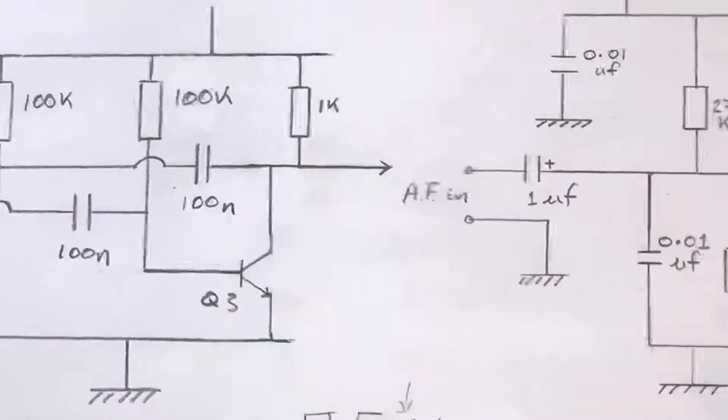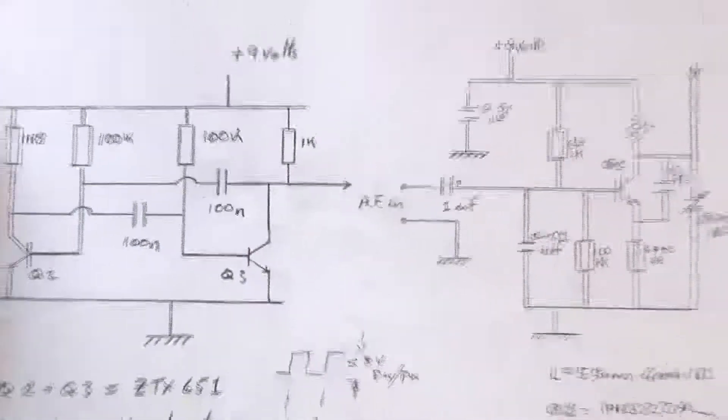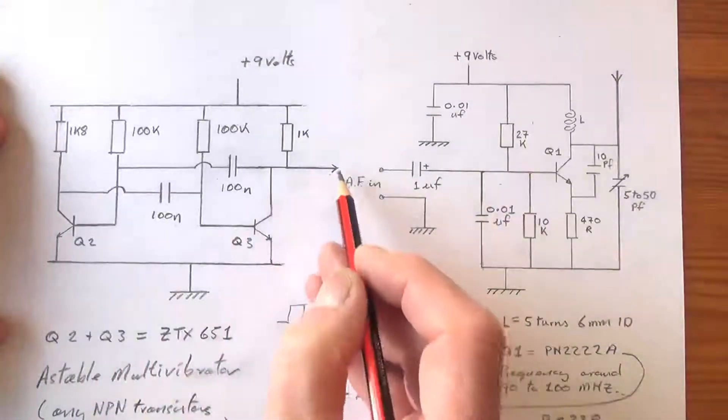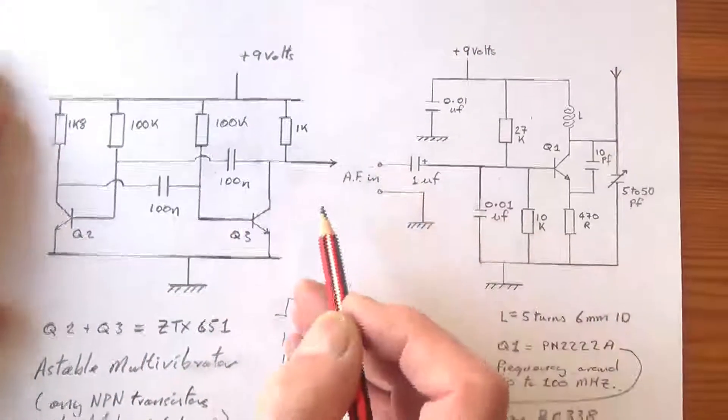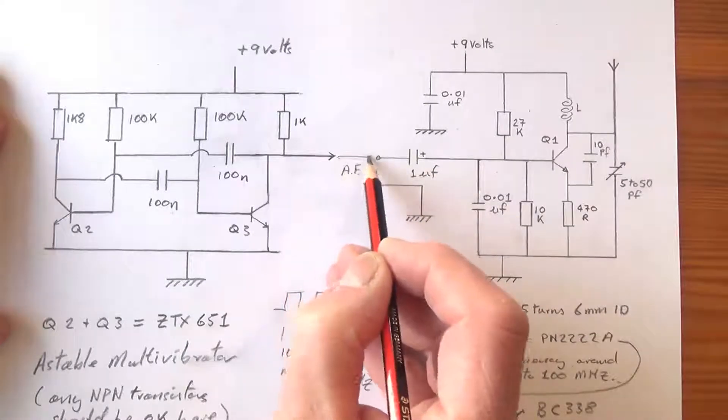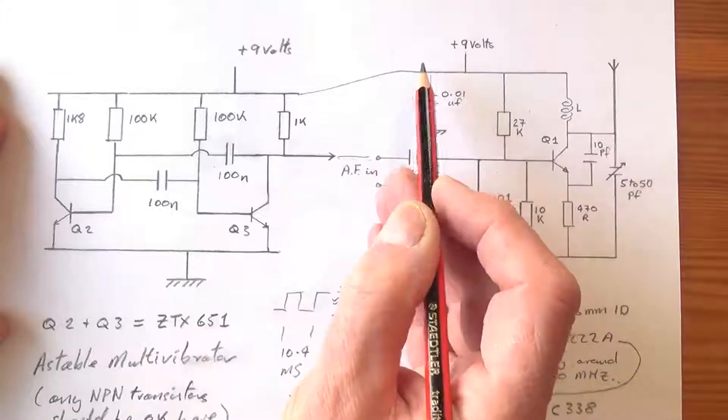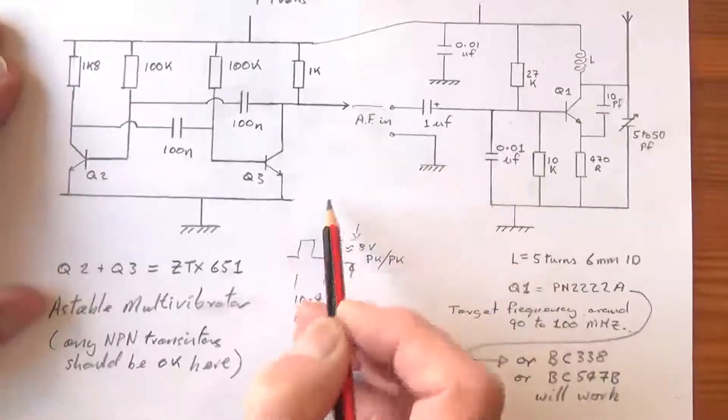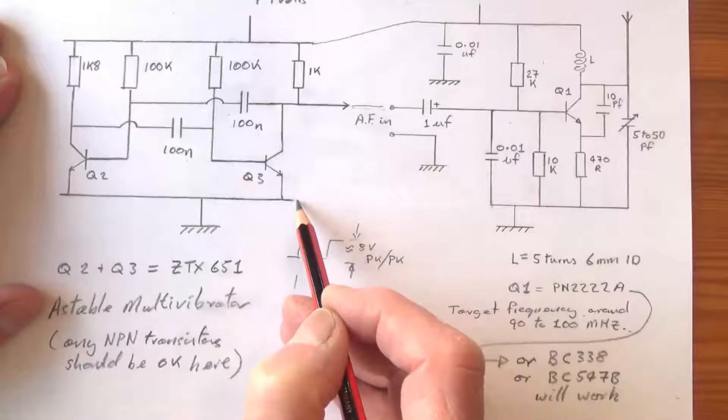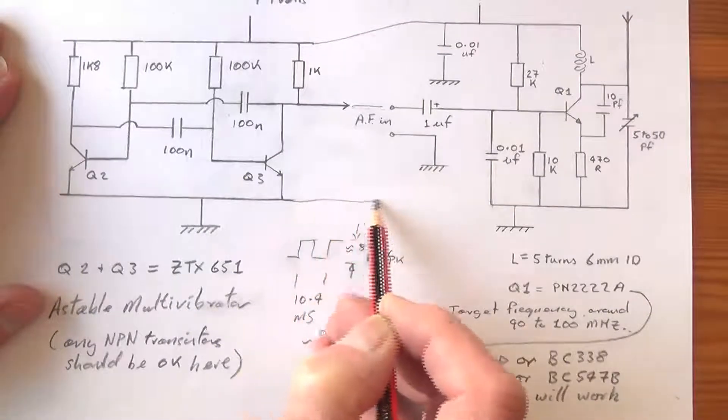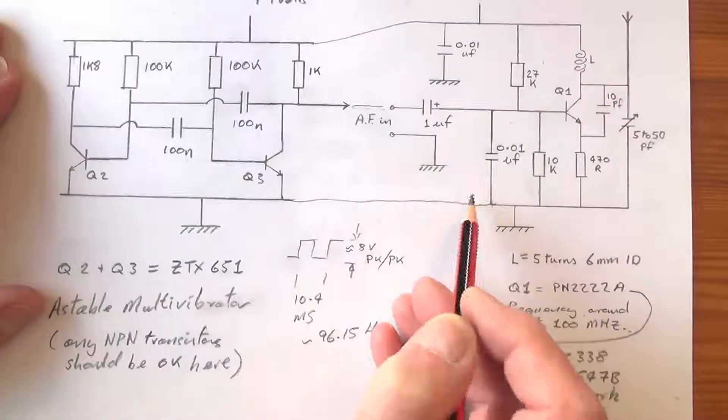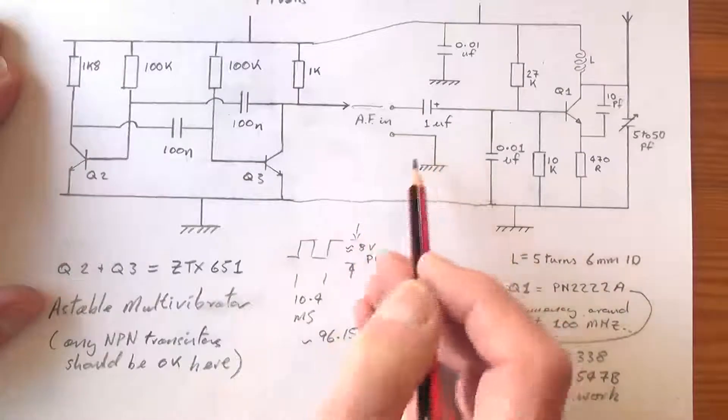And then the connections to the transmitter are, of course, the audio frequency goes in across there. This nine volt rail is a common rail and of course the ground is common ground there.